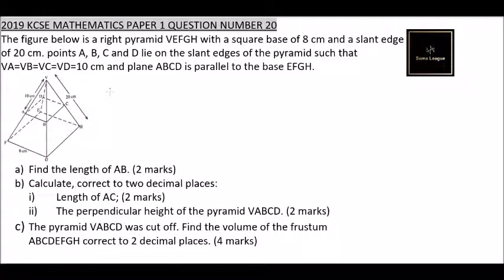Number 20: the figure below is a right pyramid VEFGH with a square base of 8 centimeters and a slant edge of 20 centimeters. Points A, B, C, and D lie on the slant edge of the pyramid such that VA = VB = VC = VD = 10 centimeters, and the plane ABCD is parallel to the base EFGH.